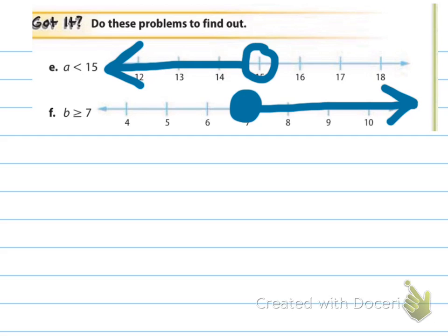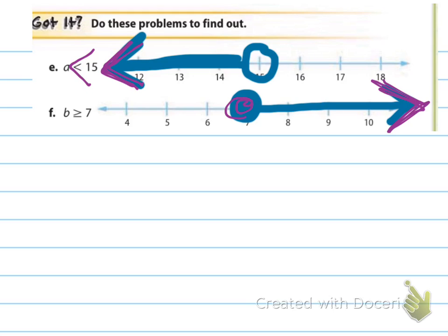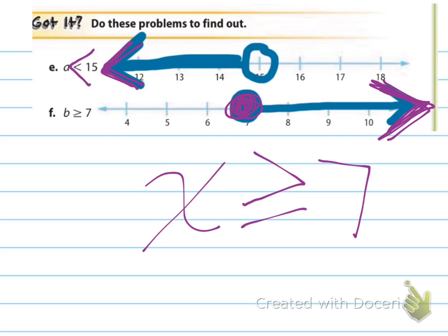For E, I drew an open circle at 15 because there's no equal sign with the less than sign, and I highlighted all numbers less than 15. Notice that the less than symbol and the arrow are both pointing in the same direction — this works when the variable is on the left side. For F, there's a closed circle, which tells me it's greater than or equal to. The dot is over 7, so X is greater than or equal to 7. You can figure out the inequality just by reading the graph.